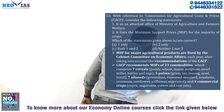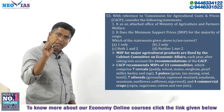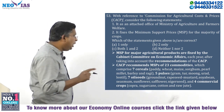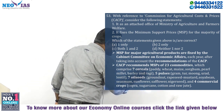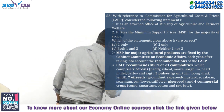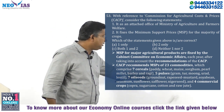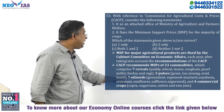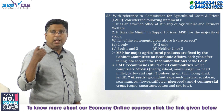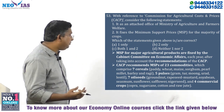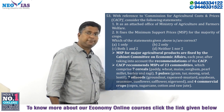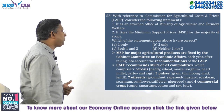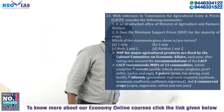Currently, CACP recommends MSP for 23 commodities including sugarcane. Knowing all 23 crops is very important. Out of these, MSP is provided for seven cereals: paddy, wheat, maize, sorghum, pearl millet, barley, and ragi. Then for five pulses: gram, tur, moong, urad, and lentil.